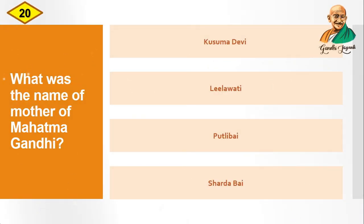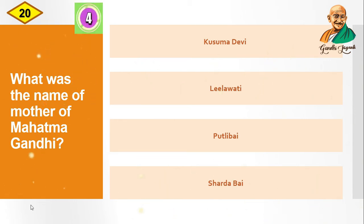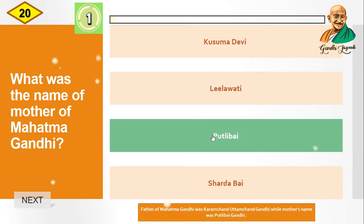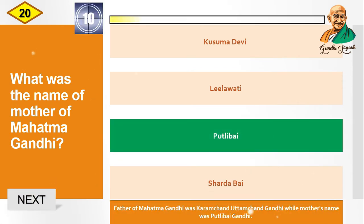Question: What was the name of the mother of Mahatma Gandhi? Options are: Kusuma Devi, Lilawati, Putlibai, Saradabai. The correct answer is Putlibai. The father of Mahatma Gandhi was Karamchand Uttamchand Gandhi and his mother's name was Putlibai Gandhi.